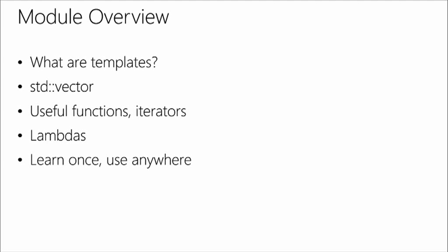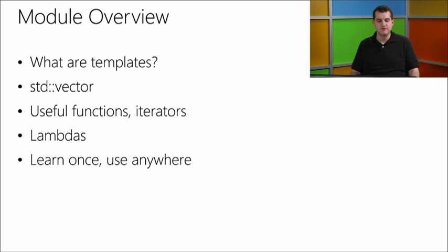Our module overview: we're going to start off with a very brief introduction to templates. We're not going to go into very much depth — you could write whole books on templates, and people have. We'll then show std::vector, which is one of the standard library classes you should probably be using more often than practically anything except perhaps string. We'll show useful functions and function templates, then show how they're used with iterators, another concept from the standard library. We'll then show off lambdas, which are a new feature of C++11.